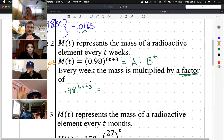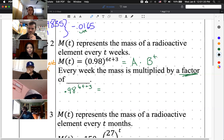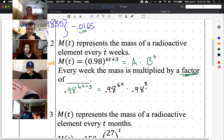And I'm getting a lot of confused faces, so I'll give you a hint. My hint is you're invoking this rule. This rule that says x to the power of a times x to the power of b is equal to x to the power of a plus b, except you're doing it in reverse. How do you do that? Andres, tell us how to do it. Would it be 0.98 to the power of 6t times 0.98 to the power of 3 equals 0.98, yeah.